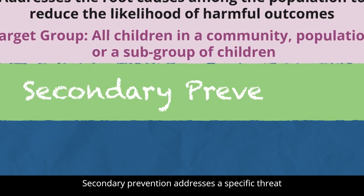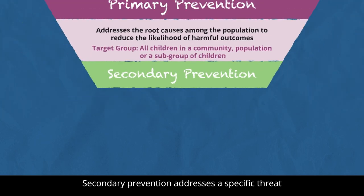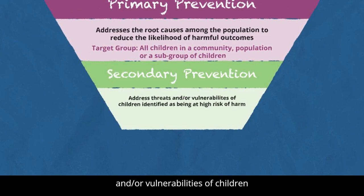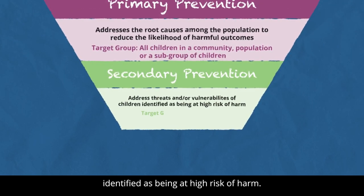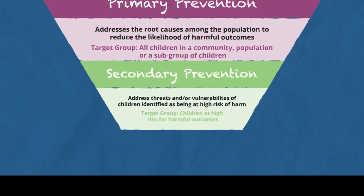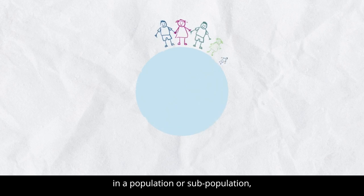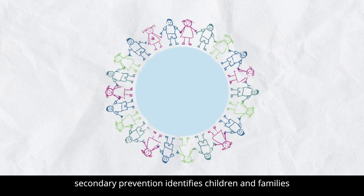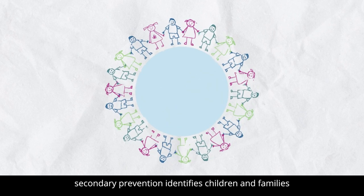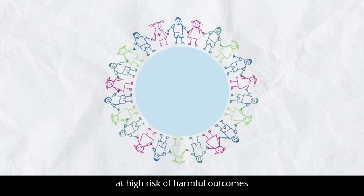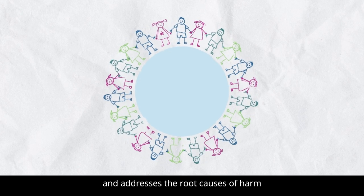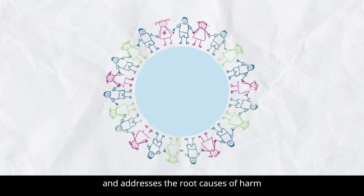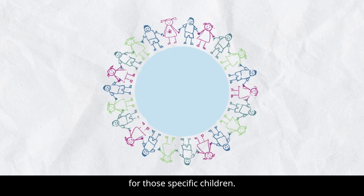Secondary Prevention addresses a specific threat and/or vulnerabilities of children identified as being at high risk of harm. Rather than targeting all children in a population or subpopulation, secondary prevention identifies children and families at high risk of harmful outcomes and addresses the root cause of harm for those specific children.